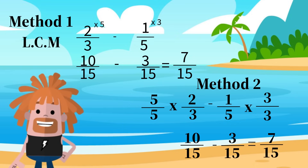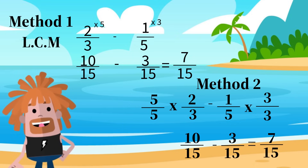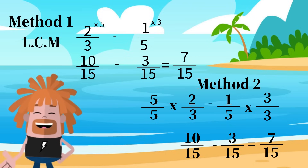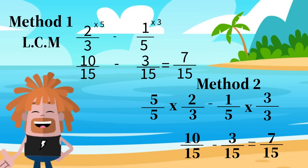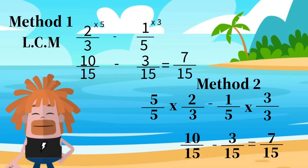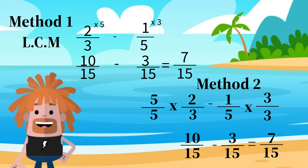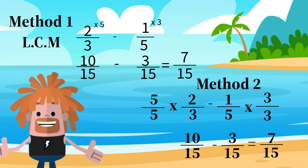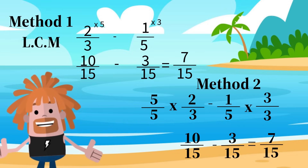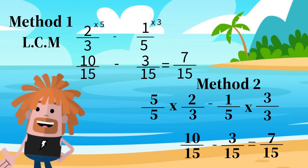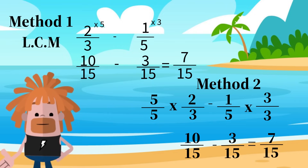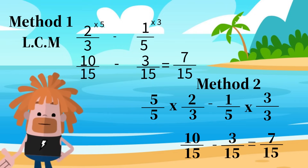Since there is no number that can equally divide 7 and 15, it is already in its simplest form. In our next video, we will talk more about simplifying fractions. Here's a problem for you to try on your own or with a friend.